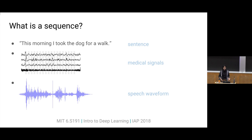A sequence could be something like a sentence, like "this morning I took the dog for a walk." This is one example, but it consists of multiple words, and the words depend on each other. Another example would be something like a medical record — one medical record would be one example, but it consists of many measurements. Another example would be something like a speech waveform, where this one waveform is an example, but it consists of many, many measurements.